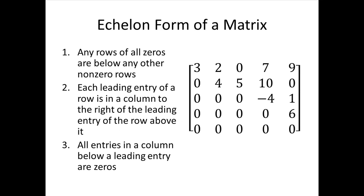Let's look at a matrix in echelon form and verify each rule. For rule 1, we need all rows of all zeros to be below any non-zero rows. Here there's only one all-zero row, and it's below all the other rows. Keep in mind that very often matrices don't have any all-zero rows — this rule just says that if there are any, they must be at the bottom.